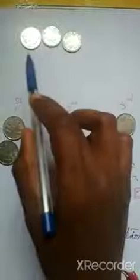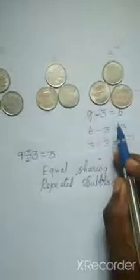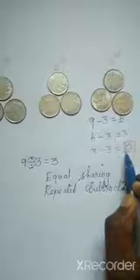Now we have only 3 coins — 1, 2, 3. Again we take out the coins to give to the persons: 1st person, 2nd person, and 3rd person. 3 minus 3 equals 0. Now we have no coins. There are no coins left.